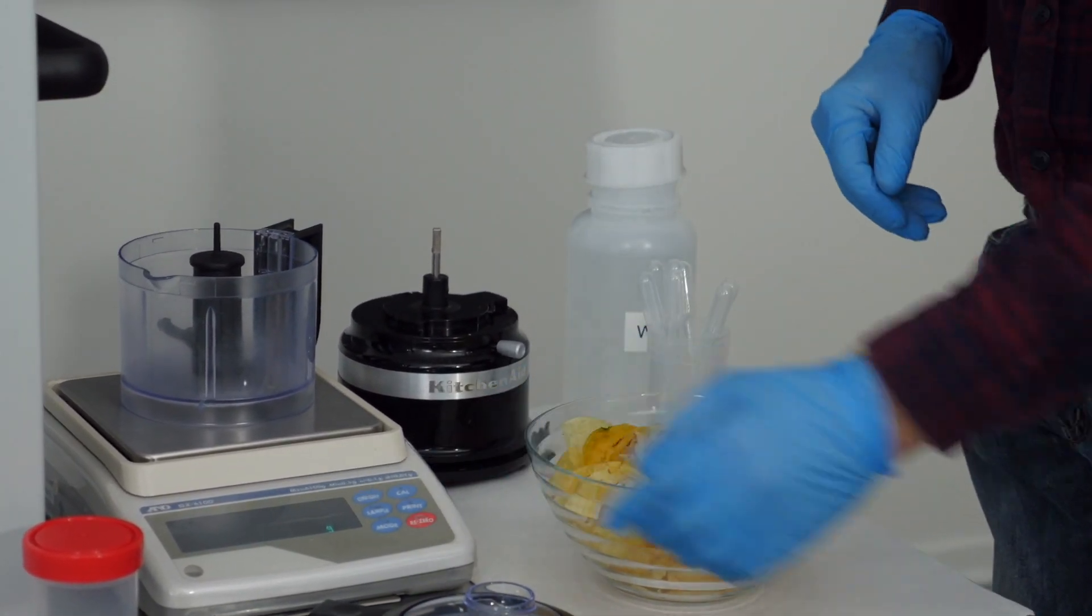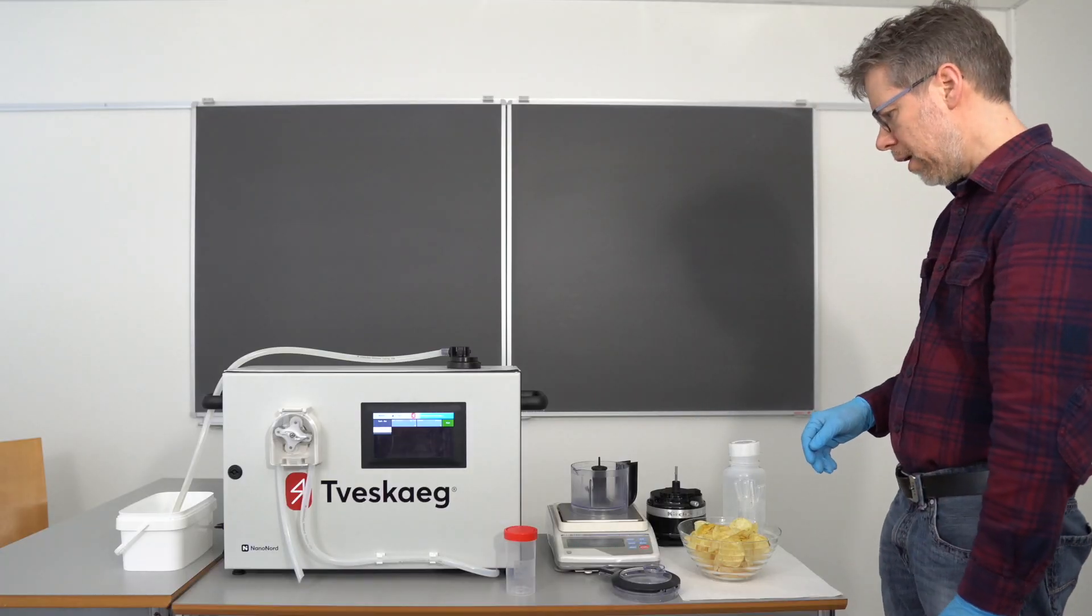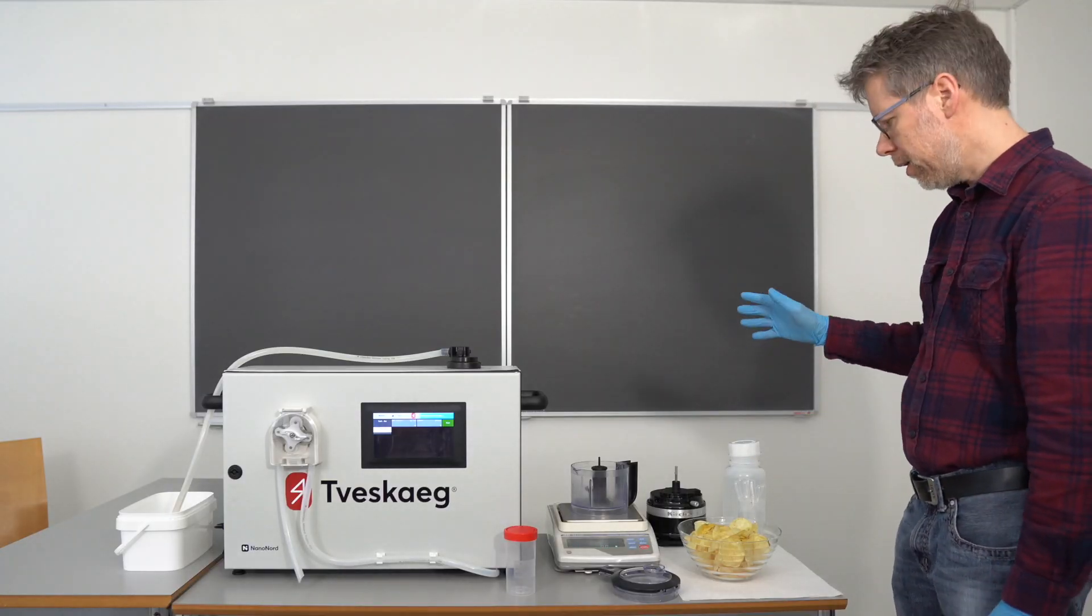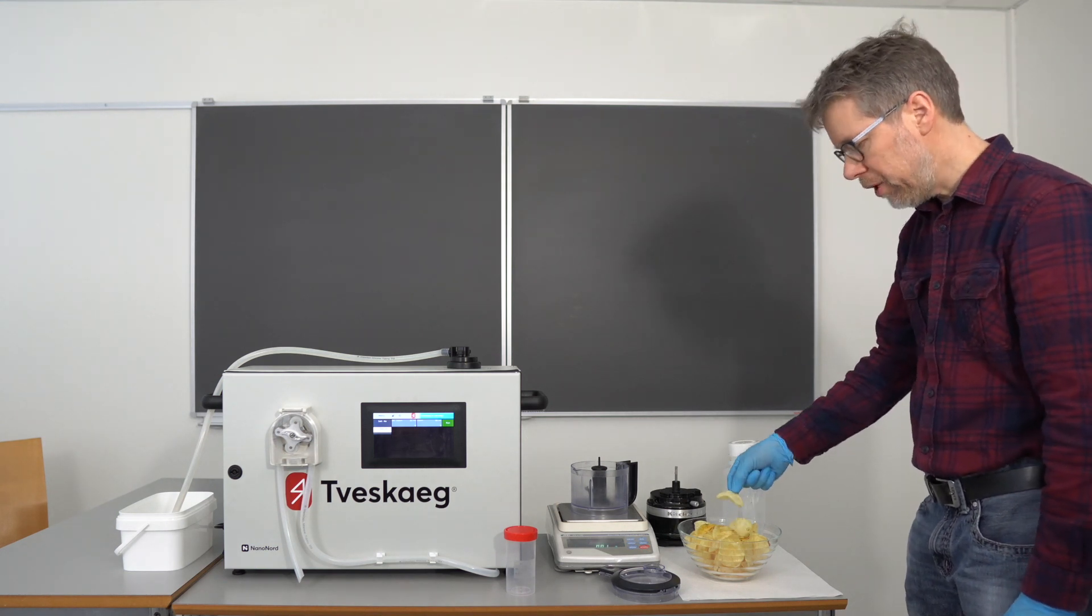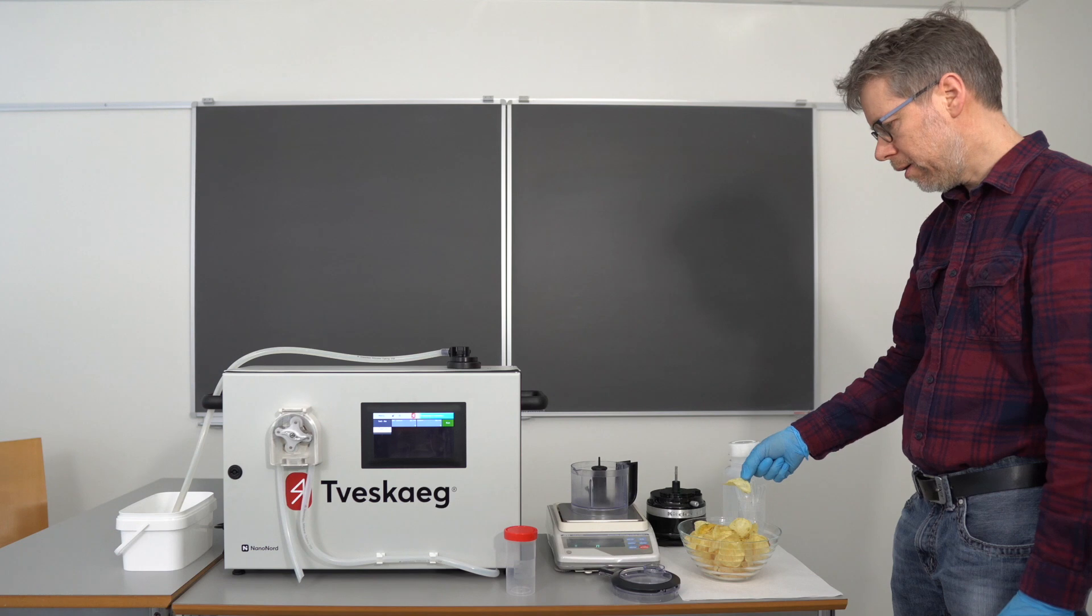Set it to zero and what we are aiming at is basically a dilution factor of 1 to 10. So I will use 50 grams of these crisps here approximately and 450 grams of water. This gives 500 in total, so it's a factor of 10 then.